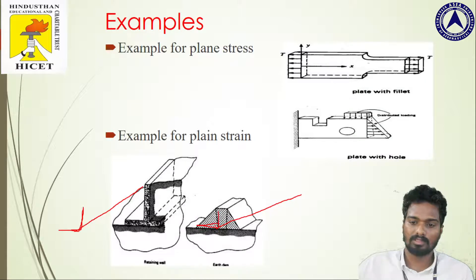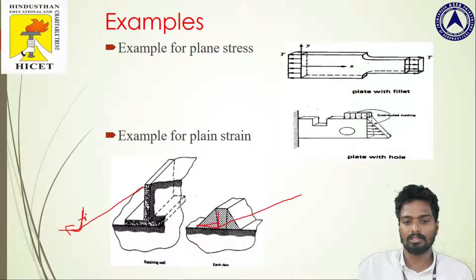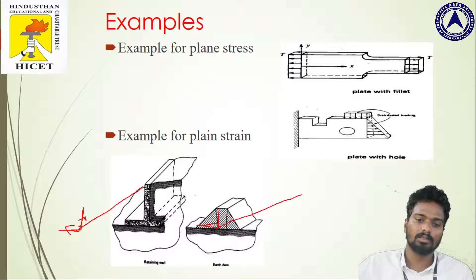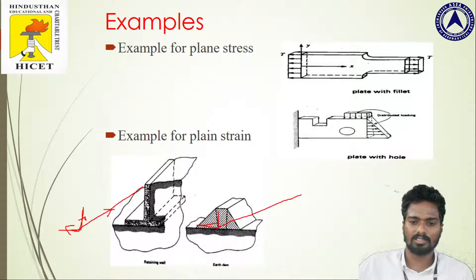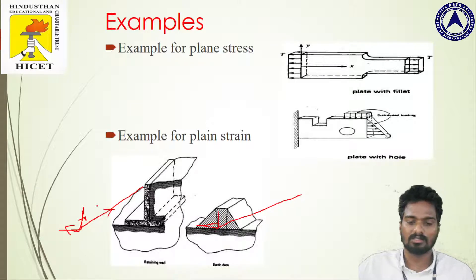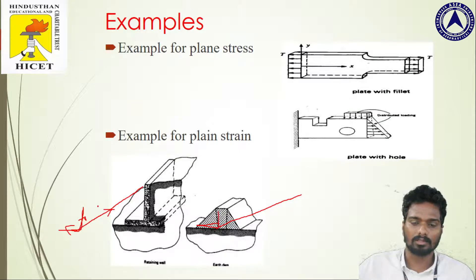The strains developed in the x and y directions are considerable because of the short length in those directions, whereas the strain developed in the z direction is negligible because it runs for a mile. So strains of 1 or 2 millimeters or centimeters in the z direction can be neglected.